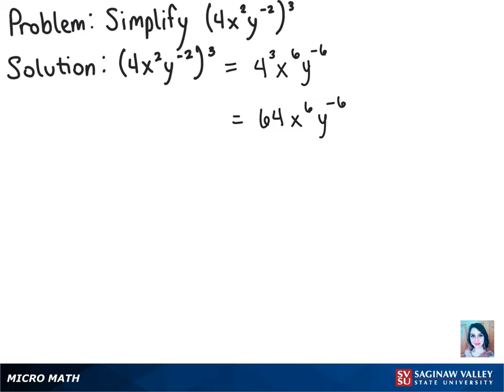And we know that a negative power means that it should be in the denominator in this case. So our final answer is 64 times x to the 6th power over y to the 6th power.